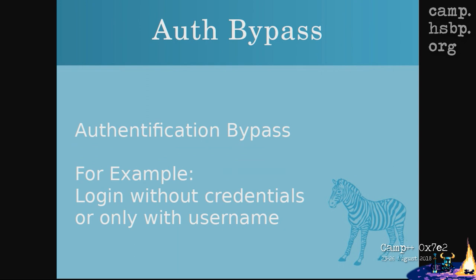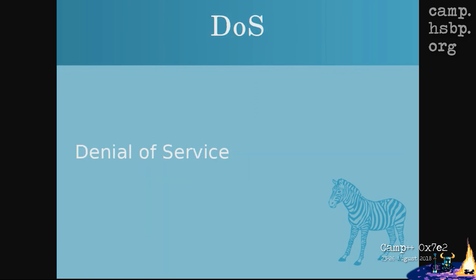There's also auth bypass — authentication bypass — where you can log in without credentials to a website, or only with a username, depending on the bug. And then denial of service: the idea is to make a system unavailable, temporarily or permanently, depending on the bug.